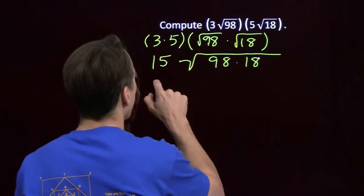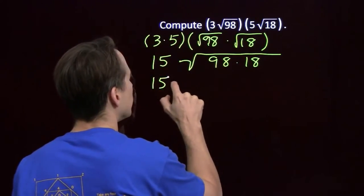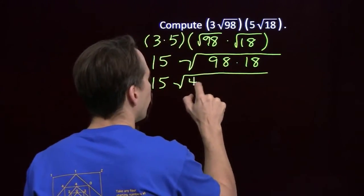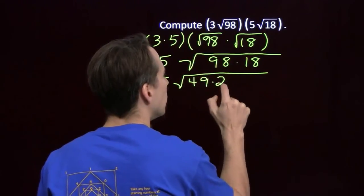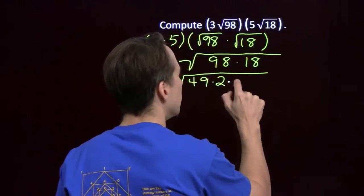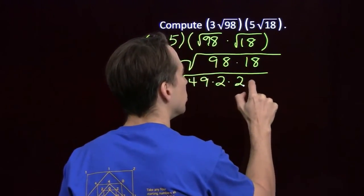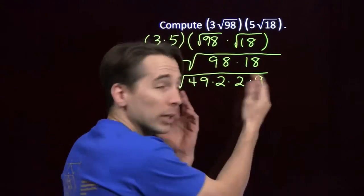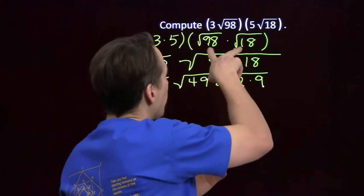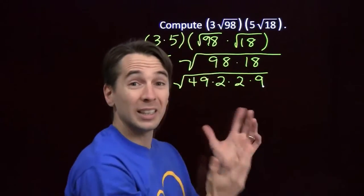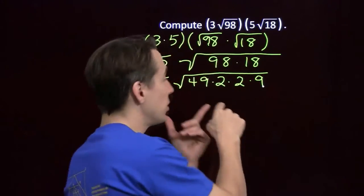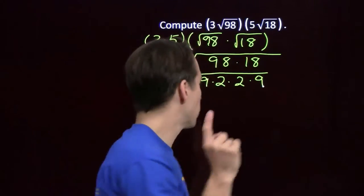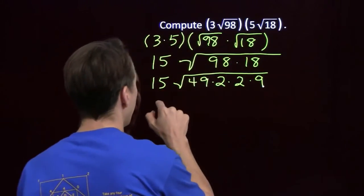So I can write this as 15 times the square root of 49 times 2 times 2 times 9. Now I can break this up — I can run this product of square roots equals square root of the product thing in reverse. I've got a square root of a product here, and I can break it up into a product of square roots that I know how to handle.